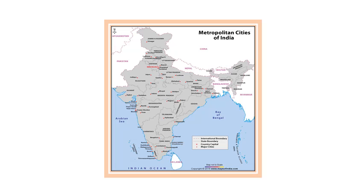India now has many large cities that are important centres of industry, business, trade, and other activities, so people flock to these cities. These are cities with the largest populations. You can see the map of India on your screen — the cities with red dots represent the metropolitan cities of India.